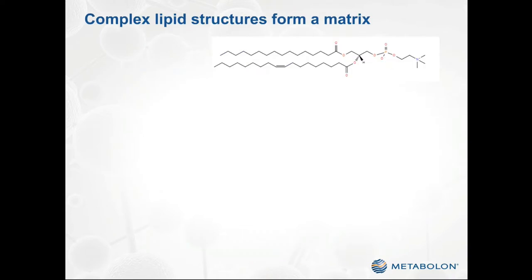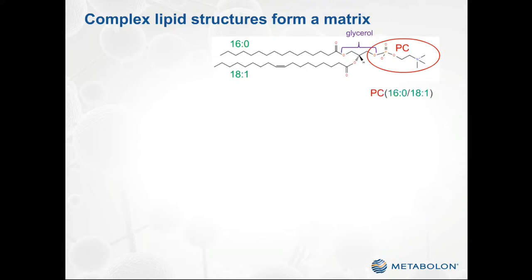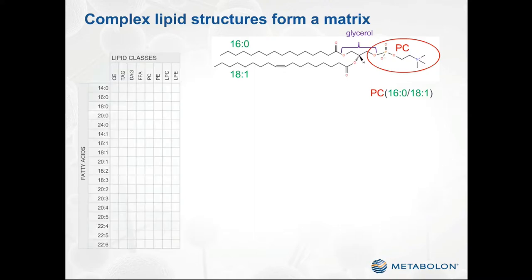Another key difference between polar metabolomics and lipidomics is that lipids have a modular structure. Let's examine this particular lipid structure in detail. It has a glycerol backbone and a phosphocholine head group, which together define it as a phosphatidylcholine lipid. It also possesses two fatty acid side chains: one consisting of 16 carbons with no double bonds, and one consisting of 18 carbons with a single double bond. Together, these features define the lipid as phosphatidylcholine 16:0/18:1. Because most complex lipids similarly consist of a head group and one or more fatty acids, we can actually think of the lipidome as a matrix, with each lipid contributing both to a column corresponding to its lipid class and one or more rows corresponding to its fatty acid composition.